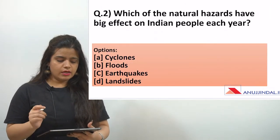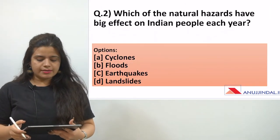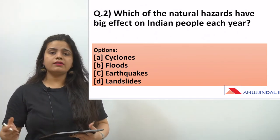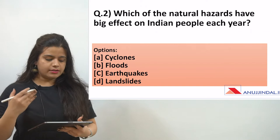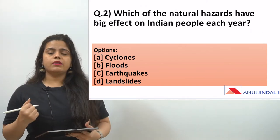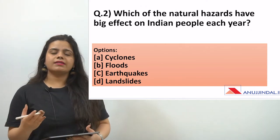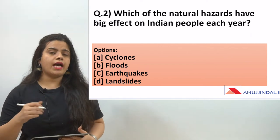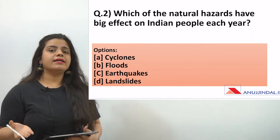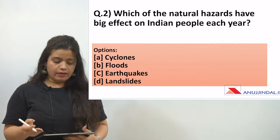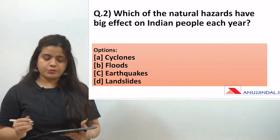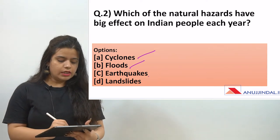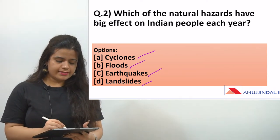The second question is: which natural hazard has the biggest effect on Indian people each year as a constant natural hazard? In other words, which hazard affects most of the Indian population annually? The options are: (A) cyclones, (B) floods, (C) earthquakes, and (D) landslides.